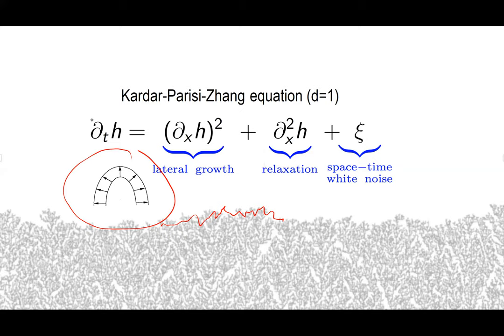This is the equation that physicists really like for random growth. Because the interface is supposed to look locally like a Brownian motion, ∂_x h should locally look like white noise, and so the square of white noise is an ill-defined object. It needs some sort of infinite renormalization to make sense of it — that's what Martin Hairer did. As long as you subtract a proper infinity, it's well-defined and there's a good well-posedness theory.